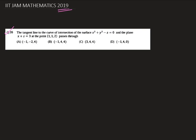The tangent line to the curve of intersection of the surface x square plus y square minus z equals 0 and the plane x plus z equals 3 at the point 1, 1, 2 passes through whether it is a, b, c, or d. We need to find.